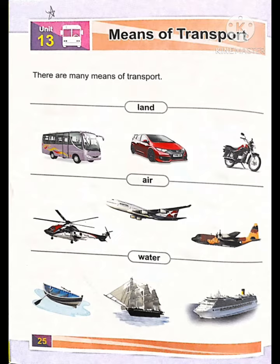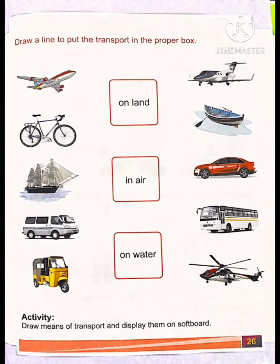There are many means of transport — land, air, and water. Land transport includes bus, cart, and motorbike. Air transport includes helicopter, aeroplane, and flying jet. Water transport includes boat, sailing boat, and ship. Now open page number 26.